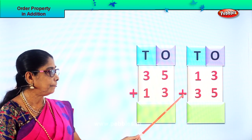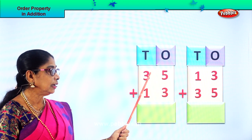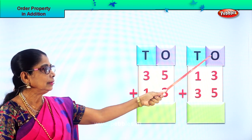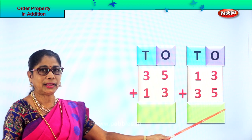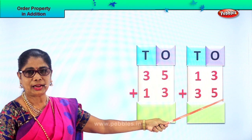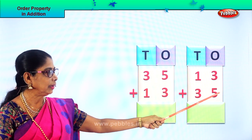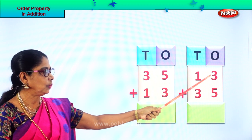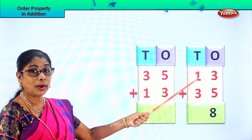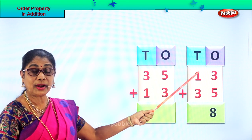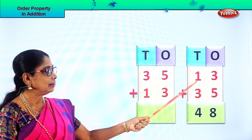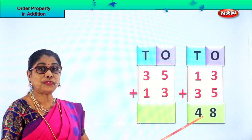Here you are asked to add 13 plus 35 or 35 plus 13. Let's add 13 plus 35. Add all the ones: 3 ones plus 5 ones — 5 in the mind, take 3 on your fingers. After 5: 6, 7, 8 ones. So 3 plus 5 gives 8 ones. Then 1 ten plus 3 tens: 3 plus 1 is 4 tens. Your answer is 13 plus 35 equals 48.